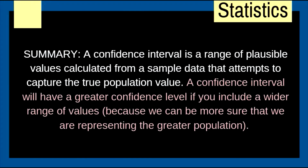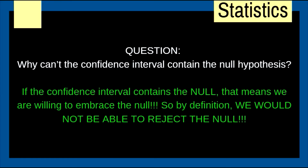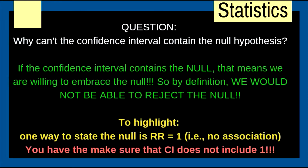Why can't the confidence interval contain the null hypothesis? If the CI contains the null, we are willing to embrace it — and by definition we cannot reject it. For example, the null can be stated as relative risk equals 1, meaning no association. So you must ensure the confidence interval does not include 1; if it does, you cannot reject the null hypothesis.